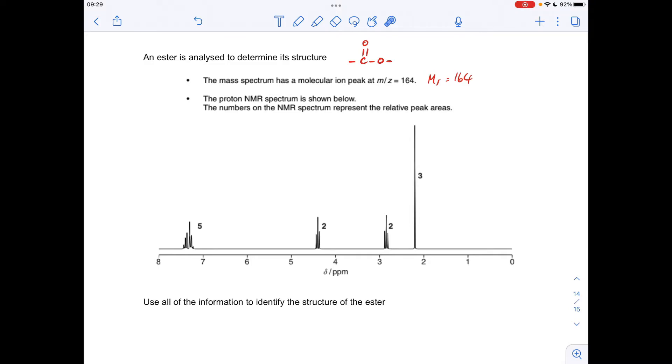Like I always do, I'm going to take each signal in turn and comment on the splitting pattern, the area, and the shift value. Okay, so we'll start with this signal here. This is a multiplet. The other thing I want to say straight away is because of that shift value between 7 and 8, we've got a couple of options. It could be an aromatic hydrogen, so a hydrogen bonded directly to a benzene ring, or it could be an OH hydrogen.